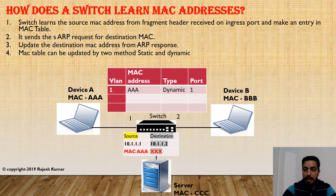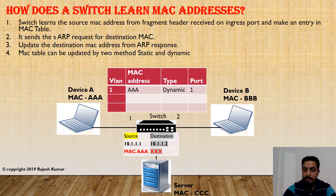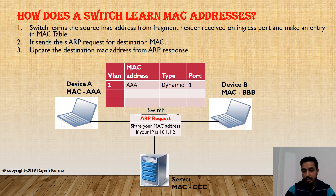The switch also looks at the destination information, but there is no MAC address entry for the destination. Since the switch also does not have the destination MAC address in its MAC table, it sends an ARP request to all other ports connected to the switch — except port 1, because the frame was initially received from that port, so it is considered the source port.